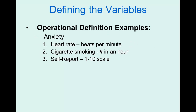Let's say that we were trying to measure anxiety. There are lots of different operational definitions we could use. One might be heart rate — when we're more anxious, our heart goes fast, so we could count the beats per minute. The idea being that people who are more anxious would have a higher beats per minute value. Either way, we end up with an actual number, and we can do statistics on that number because it's data.